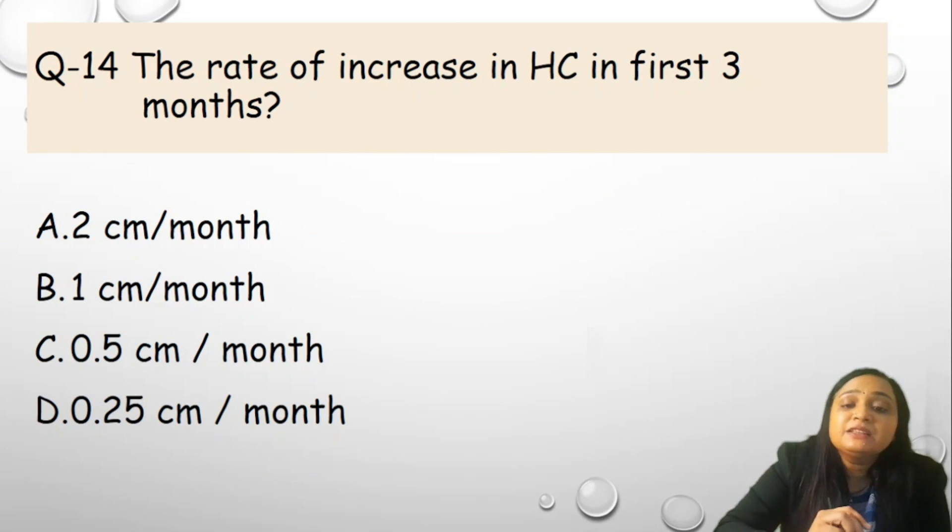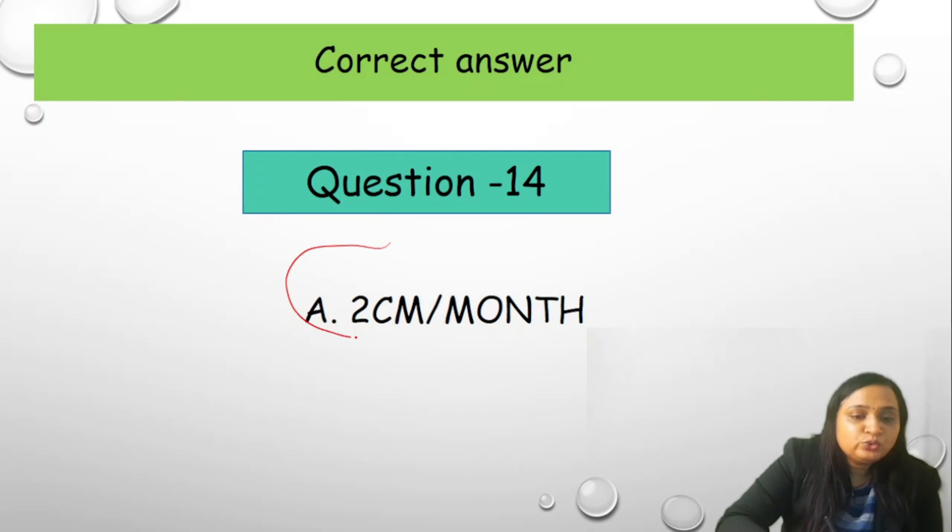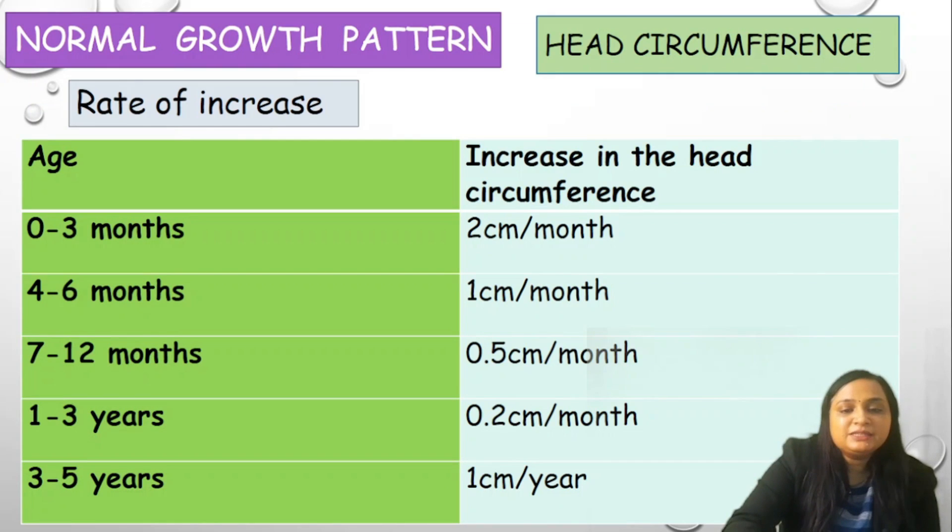The next question is the rate of increase in the head circumference in the first 3 months. We have this also remembered in a very easy way. Again I insist, please go through series 2 video. Options are 2 cm a month, 1 cm a month, 0.5 cm a month or 0.25 cm a month. Your correct answer is 2 cm a month. 0 to 3, 3 to 6 and 6 to 12. 2 cm a month, 1 cm a month and 0.5 cm a month. After that, monthly 0.2, between 1 to 3 and 3 to 5, it is 1 cm per year.